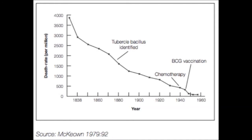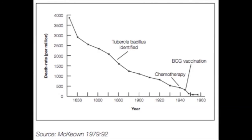This is a graph I was given at my medical interview, and I'm going to talk you through some of the questions I was asked about it. First of all, what does this graph show? The graph shows the number of deaths from tuberculosis per million members of a population per year between around 1830 and 1960. Even if you cannot identify the disease from clues such as tuberculous bacillus identified and BCG vaccination, you can say that this graph shows a reduction in death rate over time from 4,000 per million per year to only around 50 per million per year.